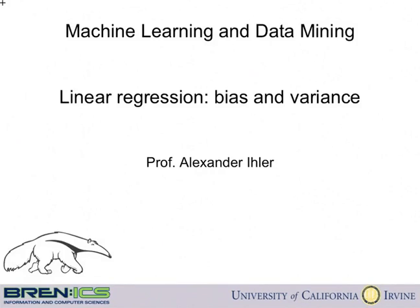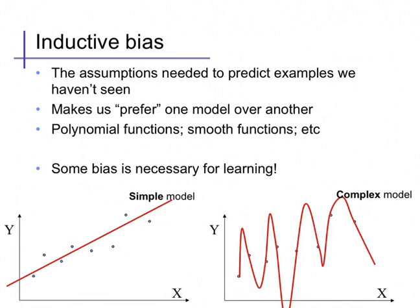A useful way of understanding underfitting and overfitting is as a balance between bias and variance. The term inductive bias refers to the set of assumptions that let us extrapolate from examples we have seen to similar examples that we have not.